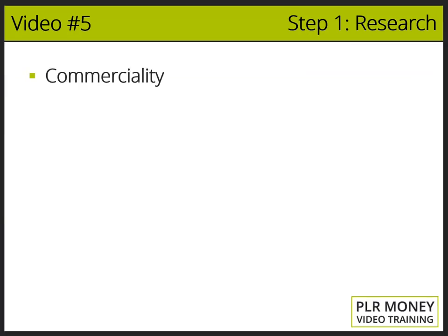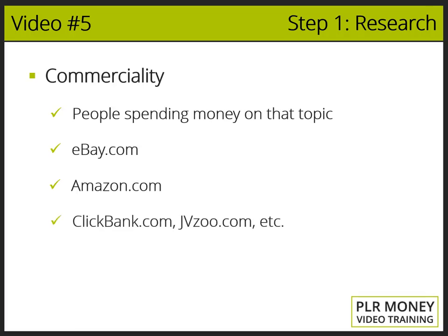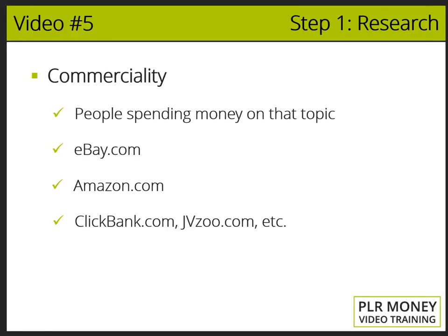For commerciality, we mean if people are spending money on that topic. We can use online retailers such as eBay.com, Amazon.com, ClickBank.com, JVZoo.com, etc. These will help us find best-selling products that will tell us how commercial the topic is over the web.